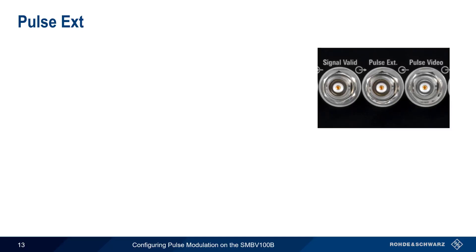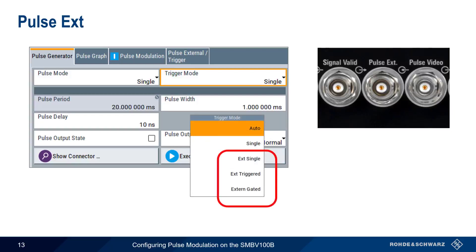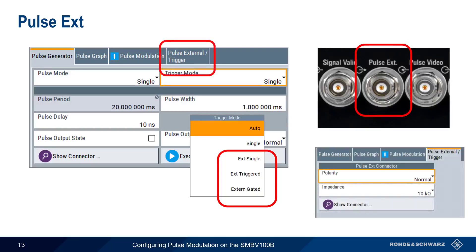Pulse External is the most important of these connectors. Earlier, when talking about trigger mode, we mentioned that there are three types of external triggers. These external triggers are received by the SMBV100B through the Pulse External connector. If we need to change the electrical properties of the input connector, such as the threshold voltage, this can be done via Pulse External trigger. Let's look at how these external triggers work.